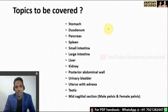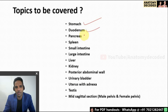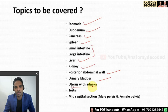What all topics I will be covering in this particular session: I will be covering all the major organs which are asked in practicals of the VIVA examinations. So I will be covering these organs: stomach, duodenum, pancreas, spleen, intestine, liver, kidney, posterior abdominal wall, urinary bladder, uterus along with the associated structures called as adnexa, and testis and the midsagittal section of male pelvis as well as female pelvis.